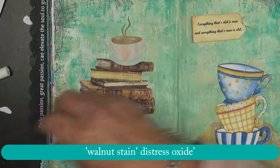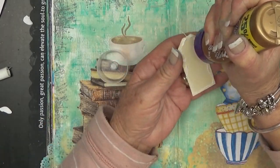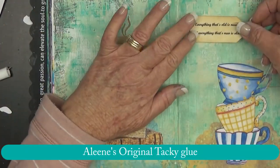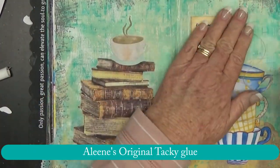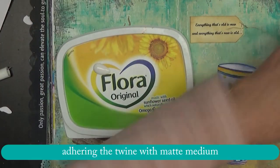So I really like that. I just inked up the edges there, I think it was Vintage Photo, it could have been Walnut Stain. I just adhered that to the page with some Aileen's Tacky Glue.